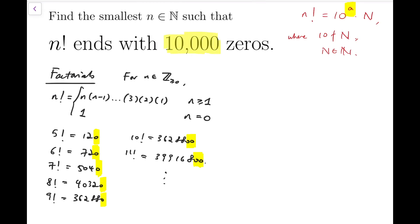Now we can further rewrite this equation into n factorial equals 2 to the A times 5 to the A times big N. Simply because 10 is equal to 2 times 5.